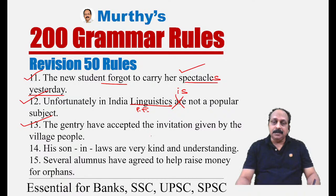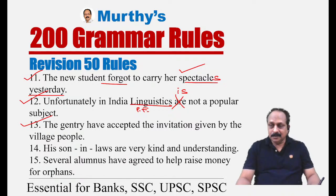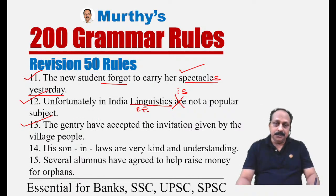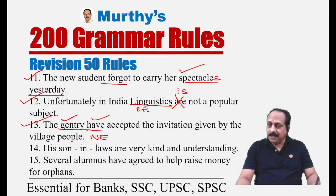Sentence thirteen: 'The gentry have accepted the invitation given by the village people.' There are five nouns — gentry, cattle, poultry, vermin, clergy — that are always in singular form but take a plural verb. So 'the gentry have accepted' is correct. No error whatsoever. 'Gentry' refers to the upper class or cream of society.